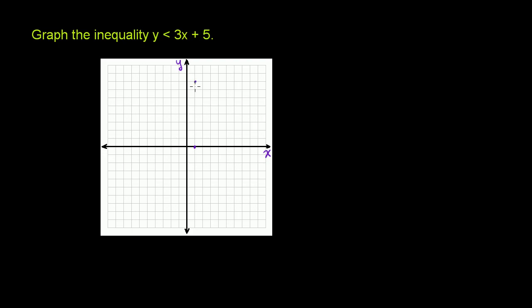It'll be all of these values. For x is equal to 1, it'll be all the values down here. And it would not include y is equal to 8. y has to be less than 8.